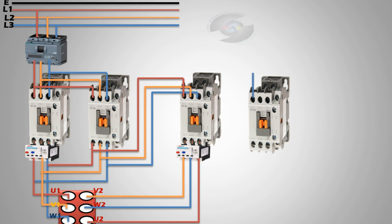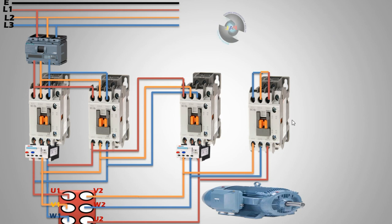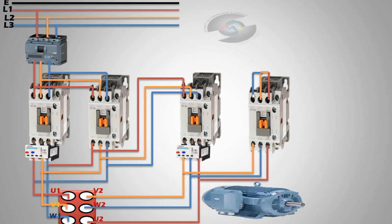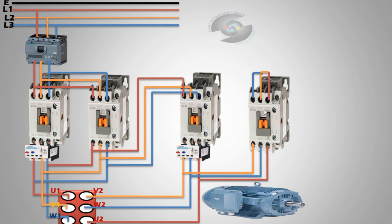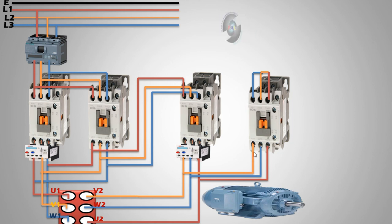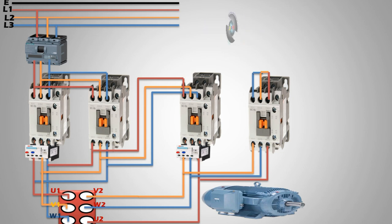The star connection is easier than delta. The three-phase load opposite ends are shorted together. This short connection from the terminal transfers current so that initially the motor starts in star. This is a big facility — the motor speed increases step by step, giving good efficiency.